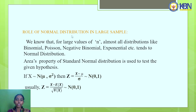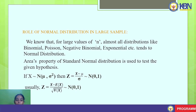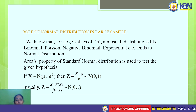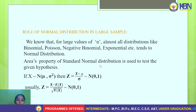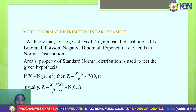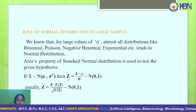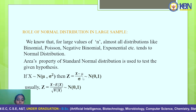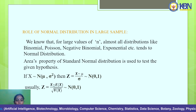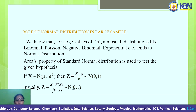Regarding the role of normal distribution in large samples: almost all distributions — like binomial, Poisson, negative binomial, and exponential — for large values of n tend to normal distribution. This property of standard normal distribution is used to test a given hypothesis. If X follows normal distribution with mean μ and variance σ², then Z = (X − μ)/σ also follows standard normal distribution. We can write μ as the expectation of X and σ as the square root of the variance of X.